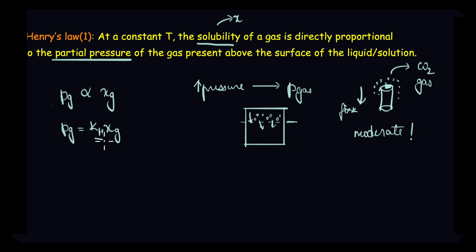This is nothing but partial pressure of the gas is equal to kh into mole fraction of the gas. Now, this kh is also called Henry's law constant. So, if you take out this kh, then you can see that it is inversely proportional to the mole fraction of the gas. So, what does it mean?